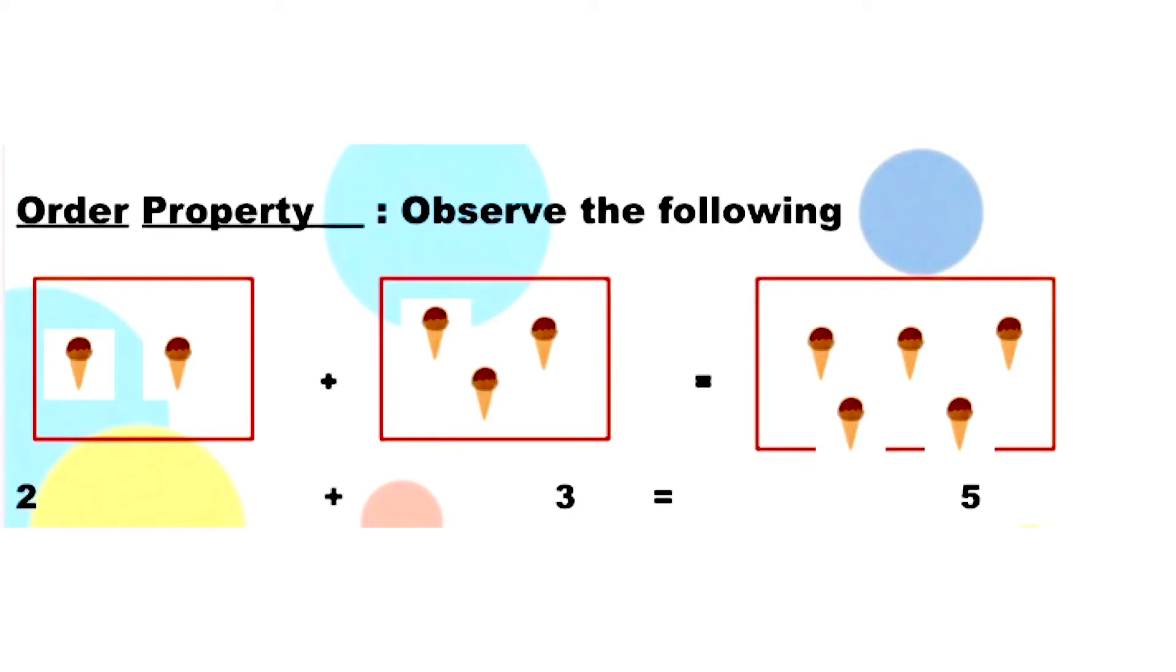In the first box, how many ice creams are there? Two. And in the second box, how many ice creams are there? Three. Then in the third box, there are a total of five ice creams. How does it come? We should add the first two boxes. That is two plus three. What is two plus three? We should add three with two. That is three, four, five. We get five. The sum is five.